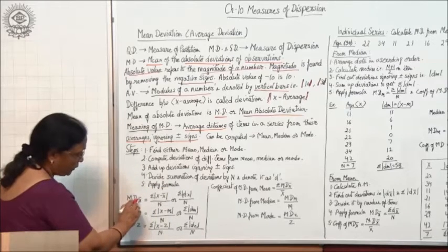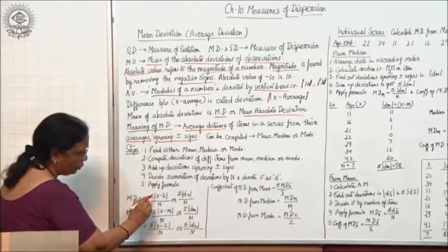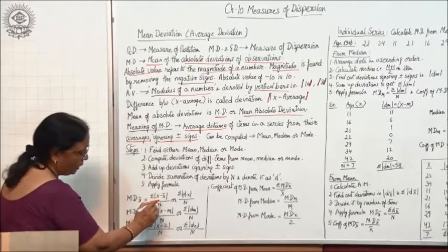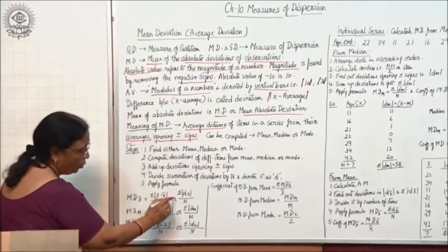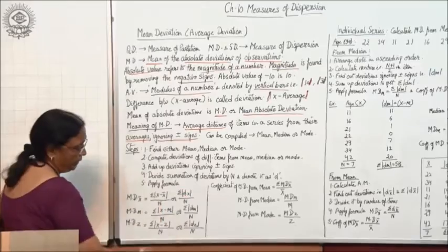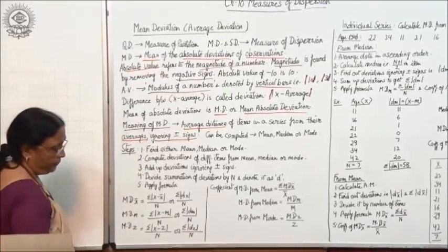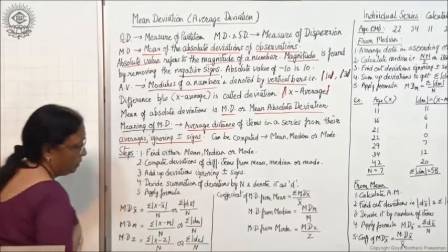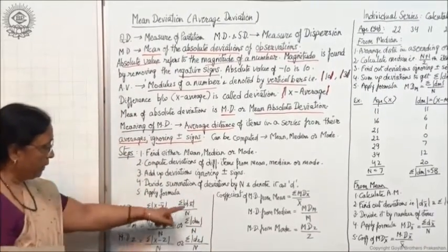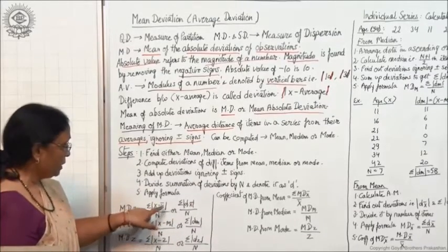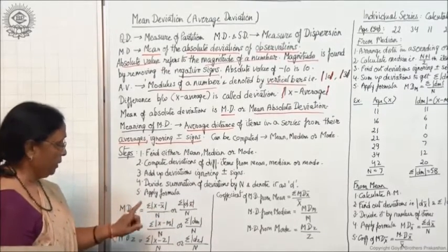Apply the formula: MD x̄ (mean deviation from mean) equals sigma |x − x̄| upon n, or equivalently sigma |dx| upon n, where dx denotes deviations from the mean.